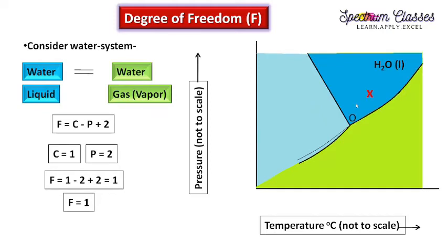Now suppose we choose a point inside the liquid region — only 1 phase (liquid) and 1 component (water). The formula gives F equals 1 minus 1 plus 2, which equals 2 degrees of freedom. This means we need to specify both temperature and pressure to define this system completely, because at the same temperature we can have different values of pressure. So on the curves it has 1 degree of freedom, at the triple point 0, and in the single-phase region 2.